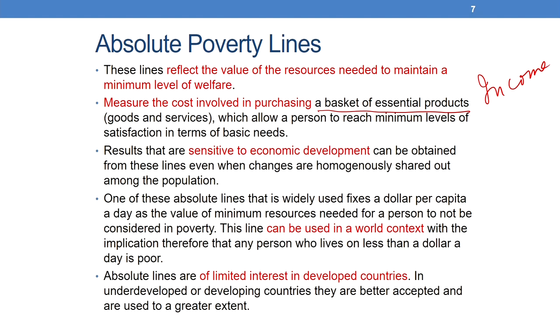Poverty lines reflect the value of the resources needed to maintain a minimum level of welfare. They measure the cost involved in purchasing a basket of essential products — usually goods and services — which allow a person to reach minimum levels of satisfaction in terms of basic needs. For instance, when we determine the cost of a food basket such as cereals, vegetables and pulses, and compare it with family income, we can assess whether the family is able to access that basket. If accessibility is poor because income is insufficient, then the concerned family is considered poor.